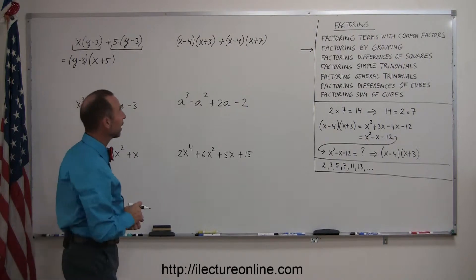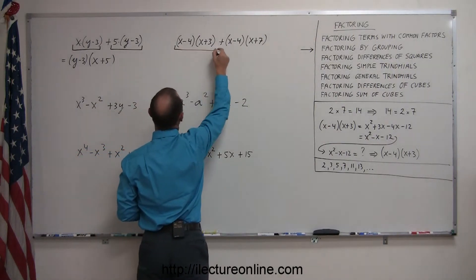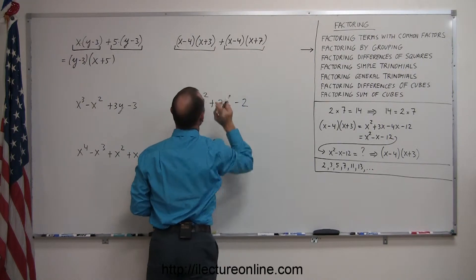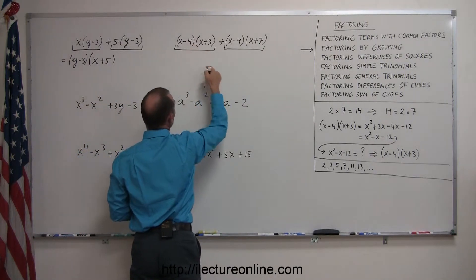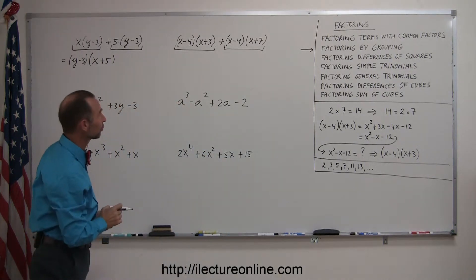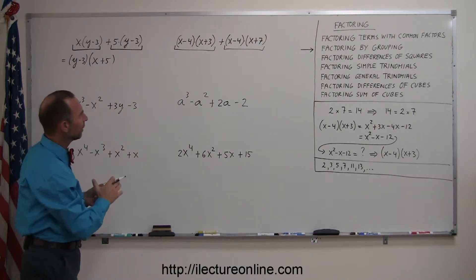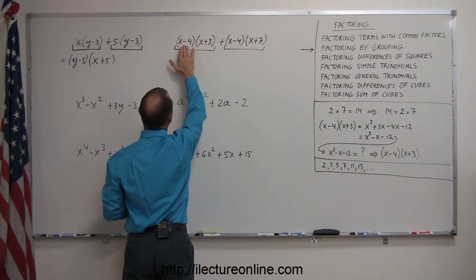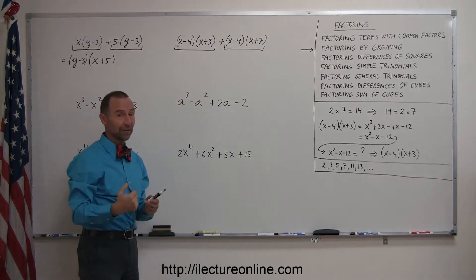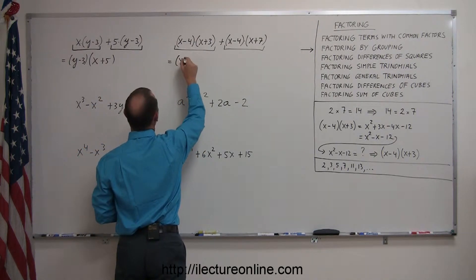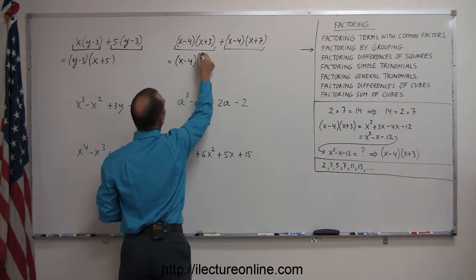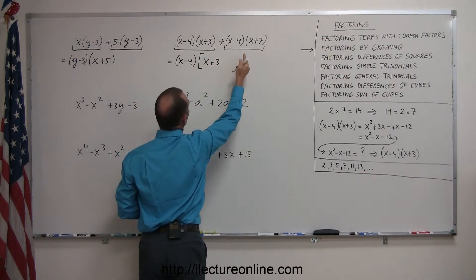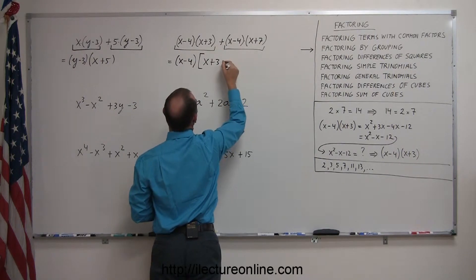Looking at the second example, there's one term plus another term, separated by a plus sign. They're multiplied together — not added or subtracted — so that makes each a single term. Is there something common between the two? Yes — this has an (x minus 4) and that has an (x minus 4), which means I can factor that out. So I write this as (x minus 4) times: dividing the first by (x minus 4) leaves (x plus 3), and dividing the second by (x minus 4) leaves (x plus 7).